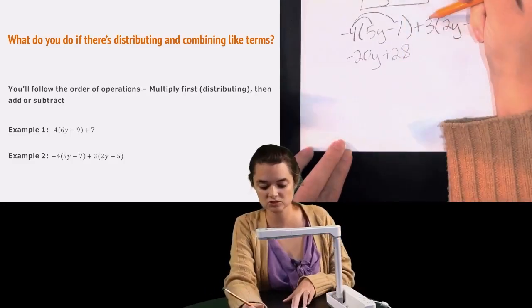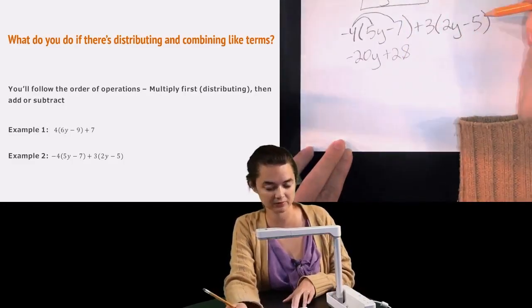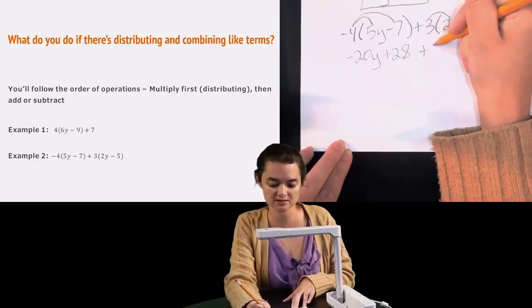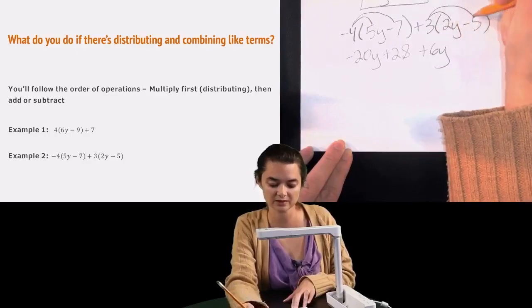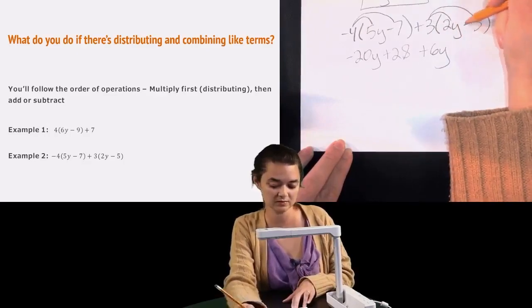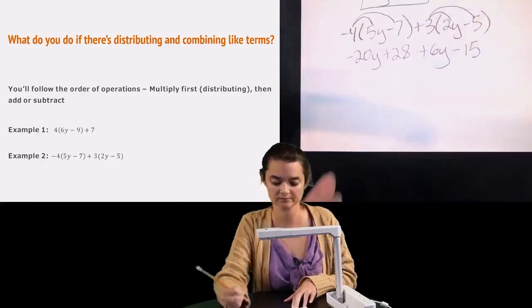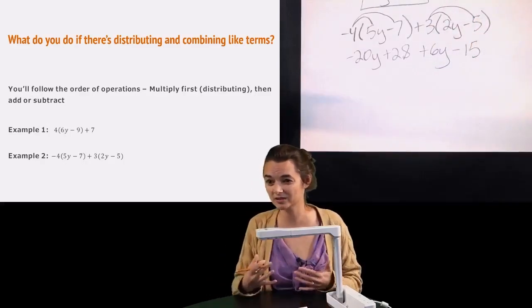Then I'm going to distribute my 3 to the second parentheses. So I'll have 3 times 2y, which would be a positive 6y. And I'll have 3 times 5, which would be 15. And it's subtracted. So that'll be minus 15.